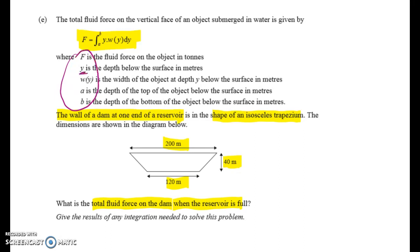Y is going to be the depth below the surface in metres, and that's going to be my variable. And W, depending on Y, so W is a function of Y, is the width of the object at depth Y below the surface in metres.